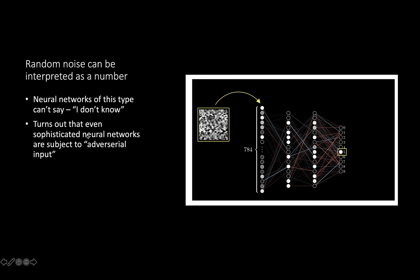One of the problems, as I mentioned before, is that random noise can be recognized as a number because the neural network can't say I don't know. This is why things like adversarial inputs work.